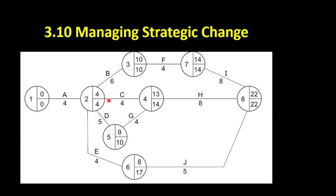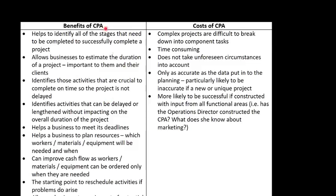So that's how we calculate float time. In terms of the value of network analysis or critical path analysis, there are a number of benefits. It's going to help us to identify all of the stages that need to be completed in order to successfully complete a project. It's going to ensure that we break down the project into its component parts and we carefully think about our strategy — what are the different parts that we need? We're then going to be able to use it to estimate the duration of a project, which might be important to a business and their clients.